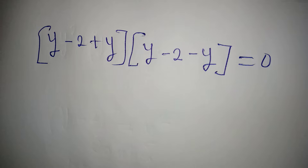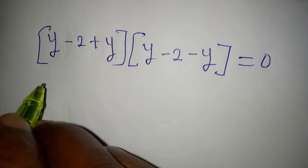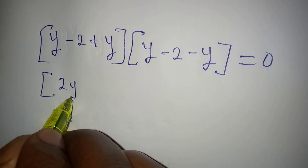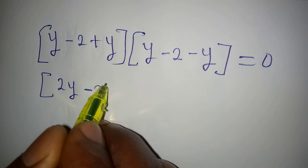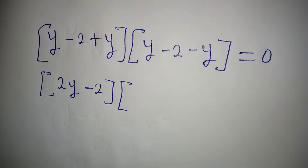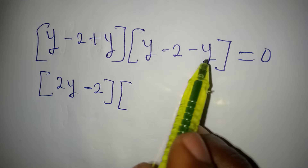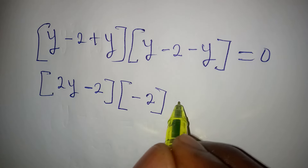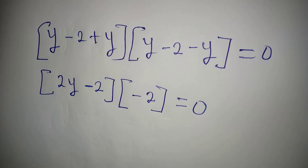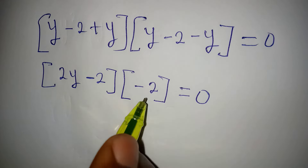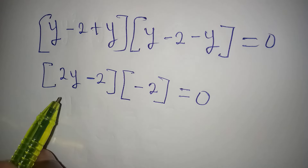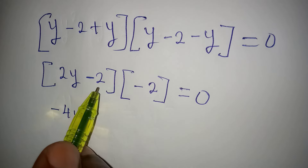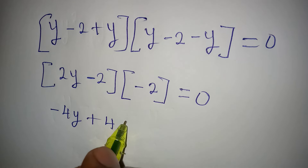Let's simplify what's inside the brackets. In the first bracket, y plus y gives 2y, then minus 2. In the second bracket, y minus y cancels, leaving just minus 2. So we now multiply: 2y times minus 2 gives minus 4y, then minus 2 times minus 2 gives plus 4, and this equals 0.